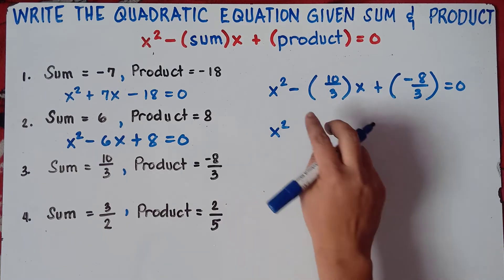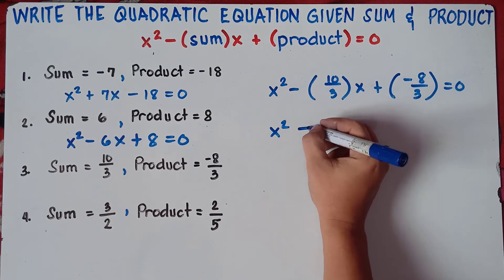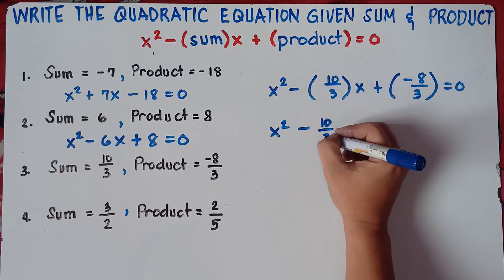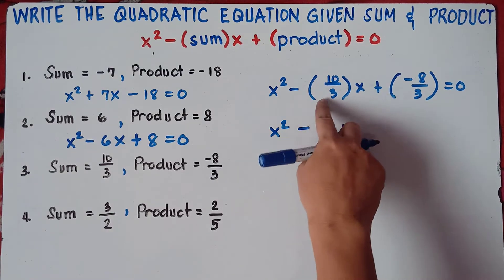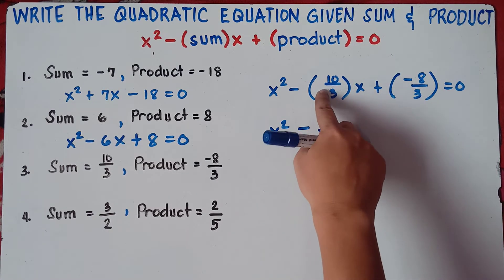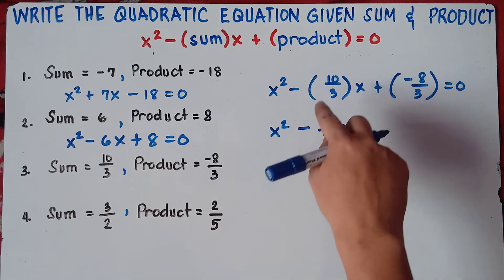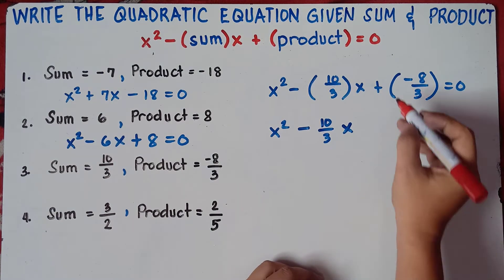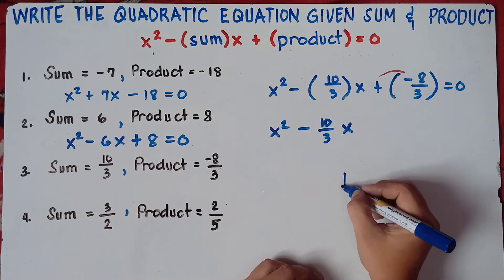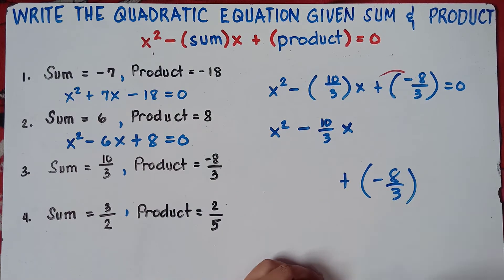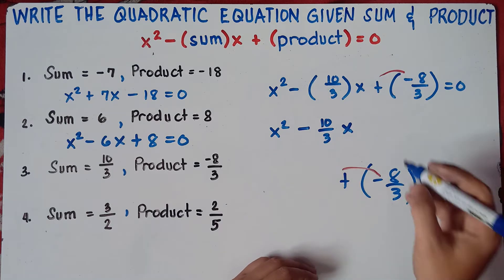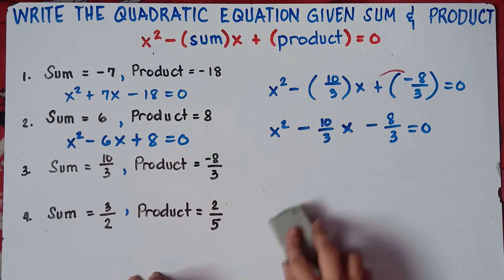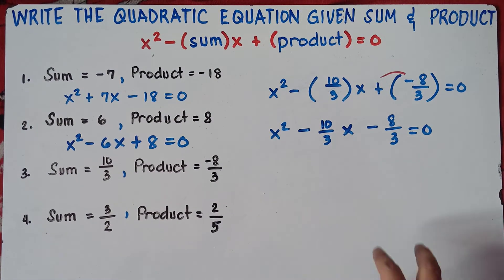So simplify this one first. This will be x squared. Negative times positive is negative, so that is negative 10 over 3 times x, which is negative 10 over 3x. Then this one: positive times negative 8 over 3, that would be negative 8 over 3. Equals 0. Alright, now this is not yet our final answer since we have fractions.